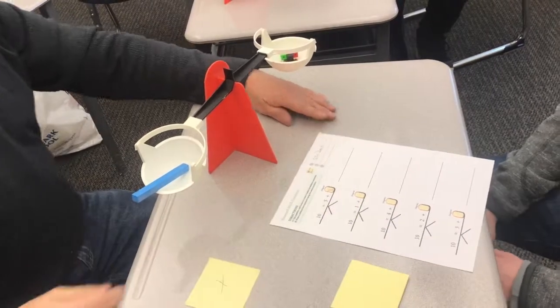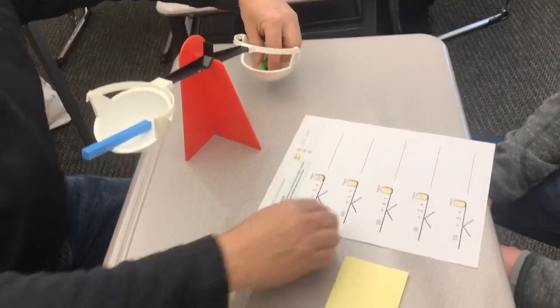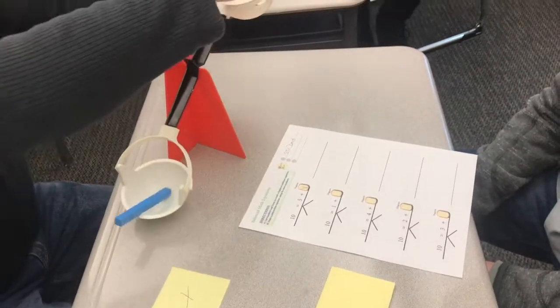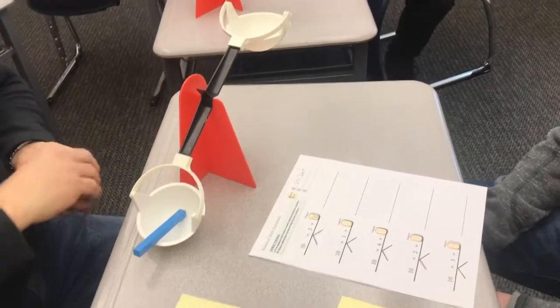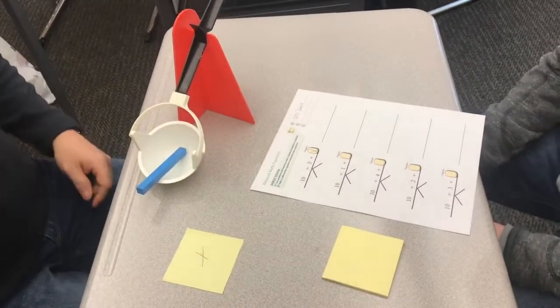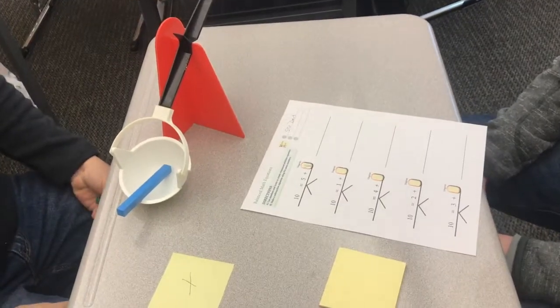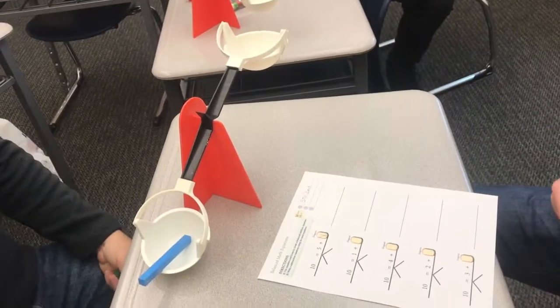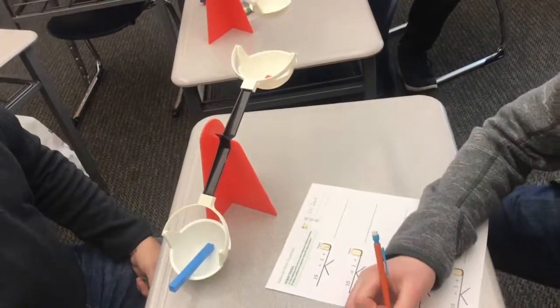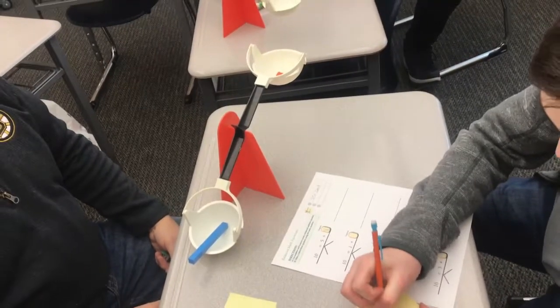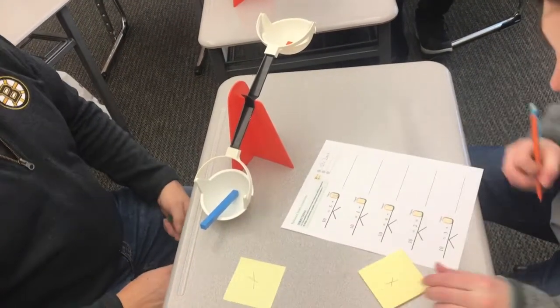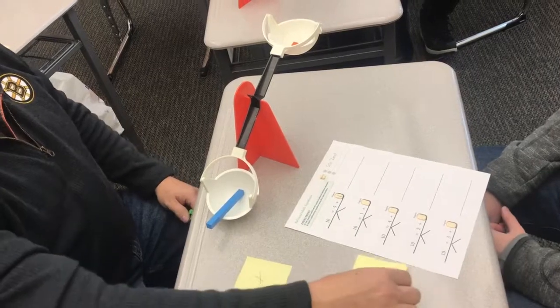All right, one more, then we're going to move on, okay? All right, what do you think is going to balance this? We've got 10 on this side, and we only have one over here. Draw a diagram of what you think needs to balance this. Beautiful. Okay, I think you're right. Let's see.